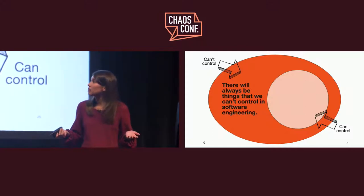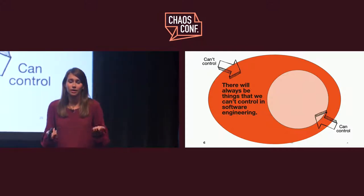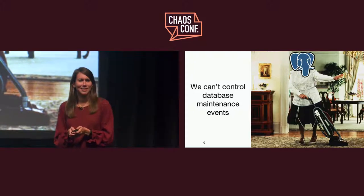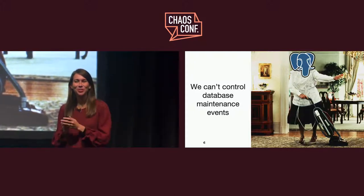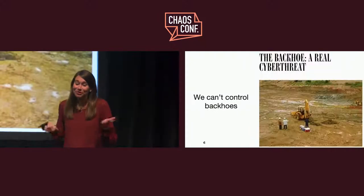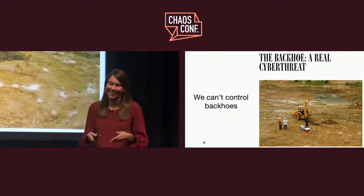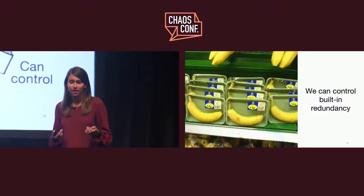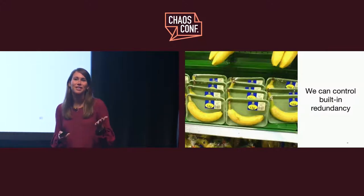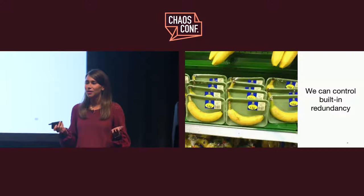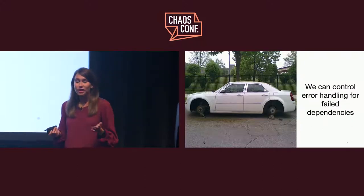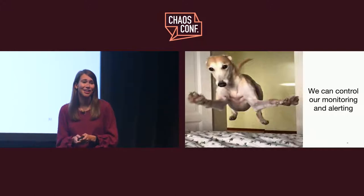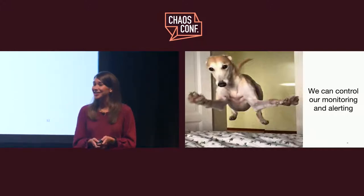So why bother? Well, in software engineering, there are always going to be things that we just can't control — those bad pushes, Postgres deciding to vacuum the database at an inconvenient time, or when the backhoe takes out your network. Luckily, there are plenty of things that we can influence and control. We can build redundancy into our database, load balancer, and app configurations so there's never a single point of failure. We can control the error handling we build around our dependencies, and we can ensure that our monitoring and alerting will let us know quickly and accurately if anything does go wrong.